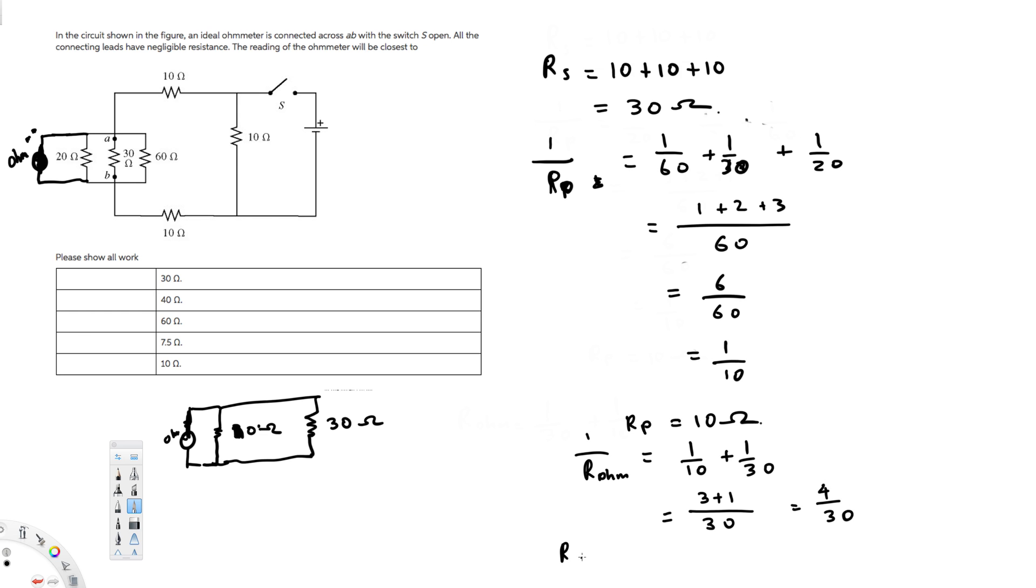Therefore, R ohm is equal to 30 divided by 4, that's equal to 7.5 ohm. And that's going to be the answer.